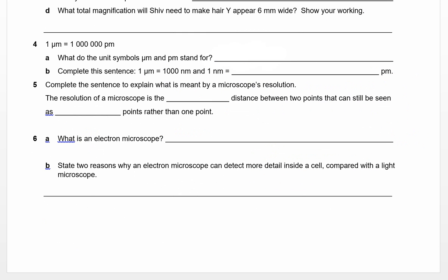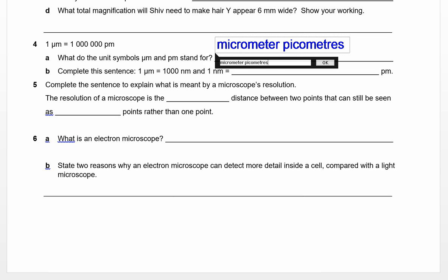Question 4: 1 micrometer equals 1 million PM. What do the unit symbols micrometer and PM stand for? We know micrometer is micrometer. We're not talking about time of day—we're talking about picometers. And there's your answer: micrometer and picometer.